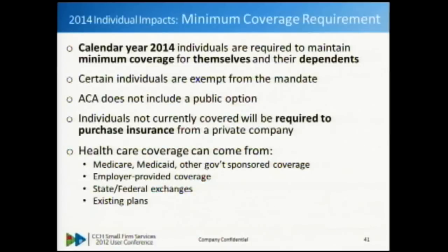ACA does not include a public option - a big differentiator from most public health care policies in other countries. Individuals who are not currently covered are required to get private insurance. Private insurance can come from employer-provided coverage, existing personal medical plans that are grandfathered in, existing government-sponsored Medicare, Medicaid, or other state programs, or the federal and state exchanges. Anybody not covered under any of these will go to the state exchange.